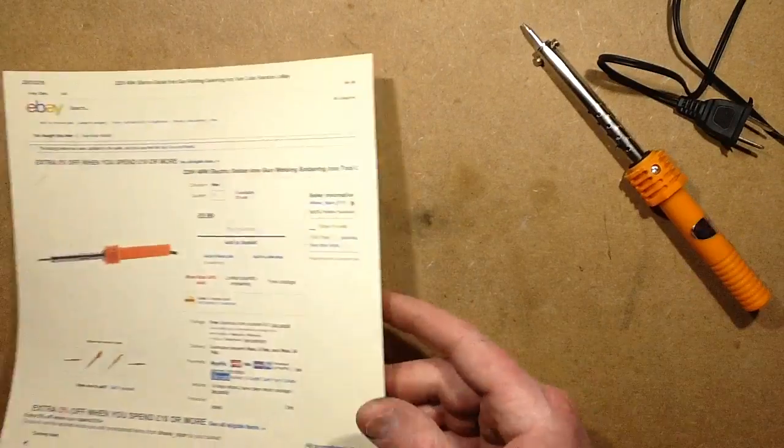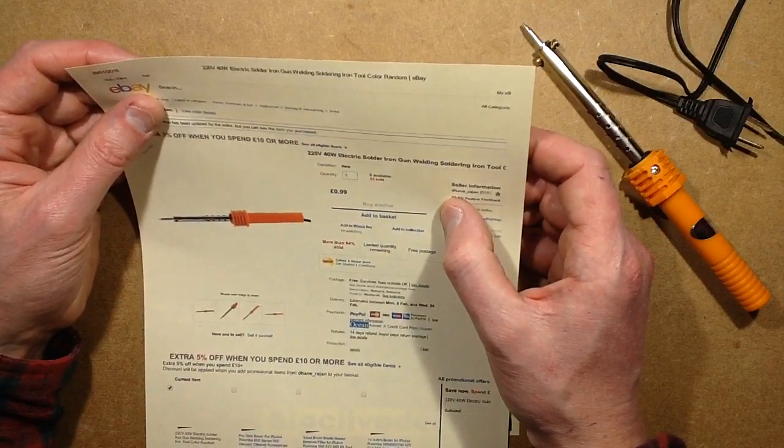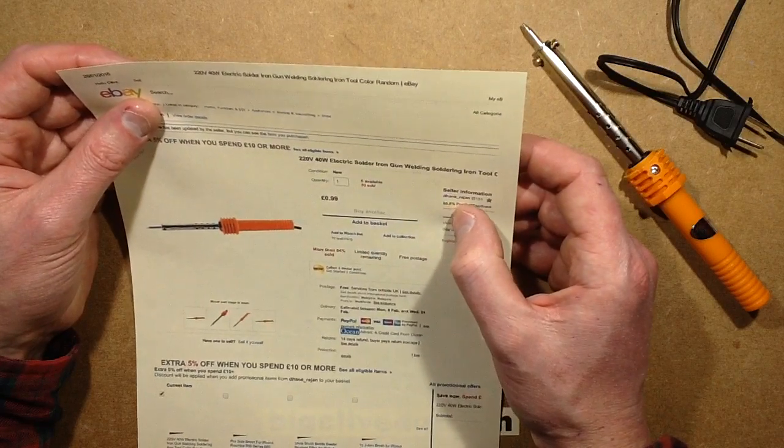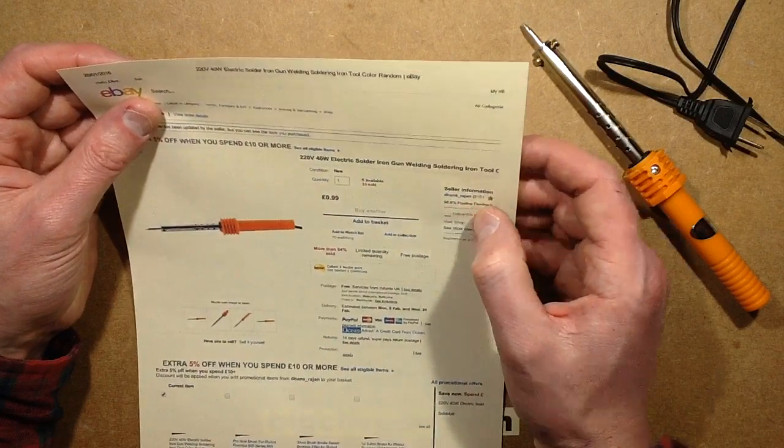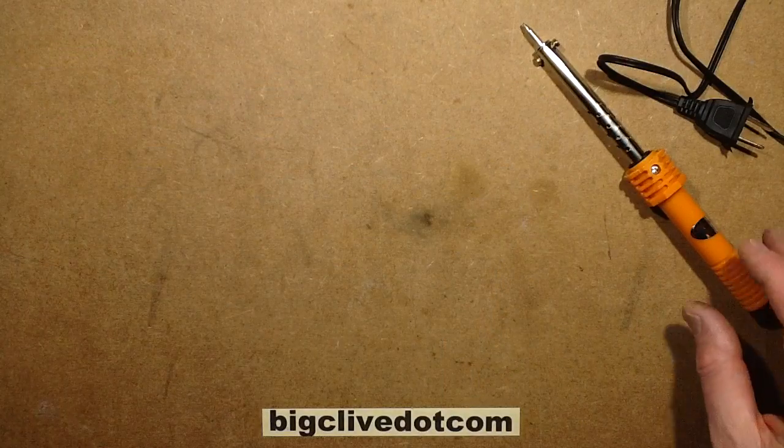So this one came from eBay, a seller called Dane Rajan D-H-A-N-E underscore R-A-J-A-N, and it costs 99p inclusive, so let's not have too high an expectation.